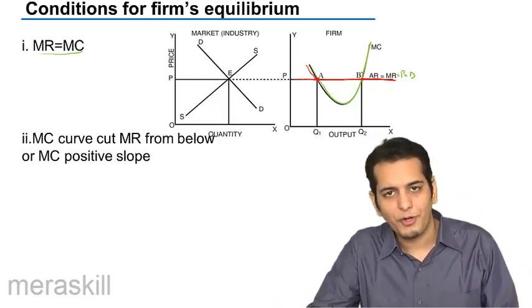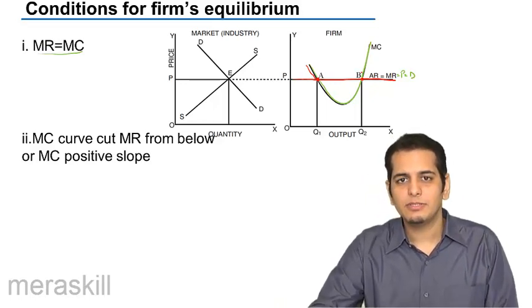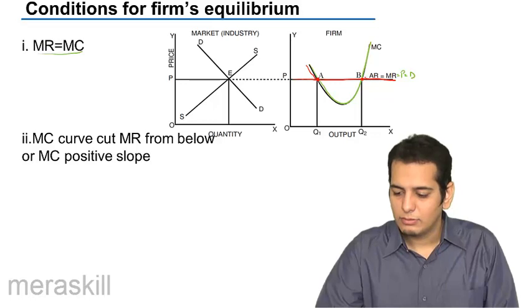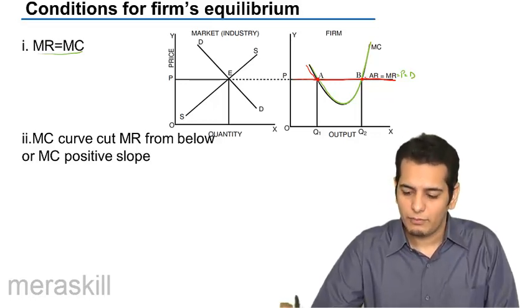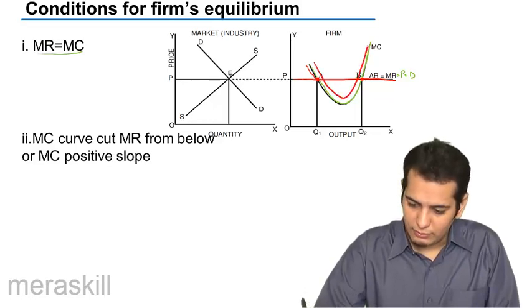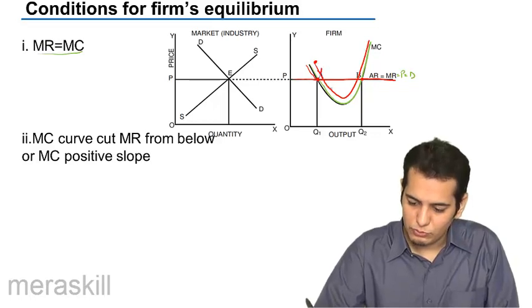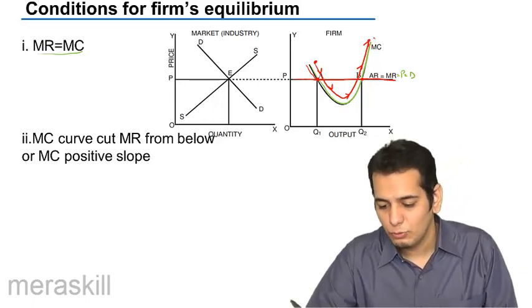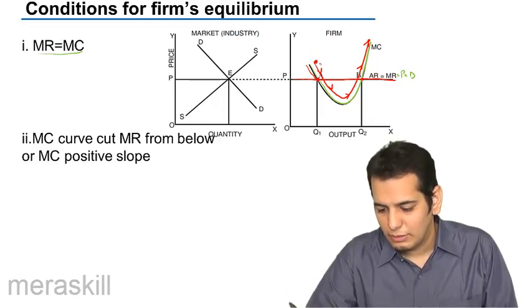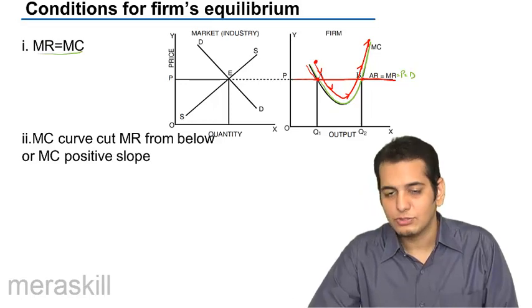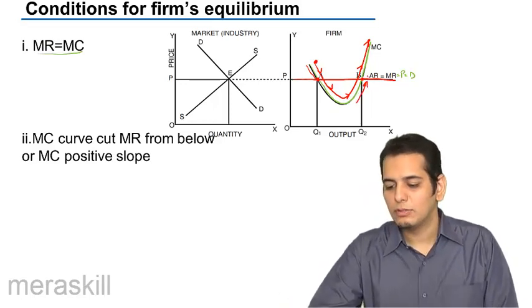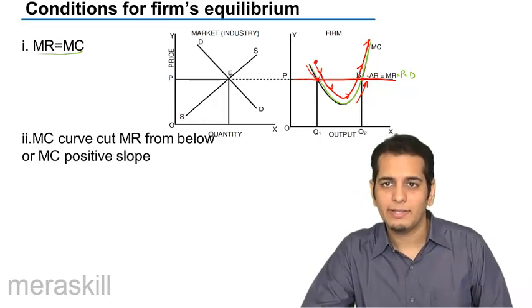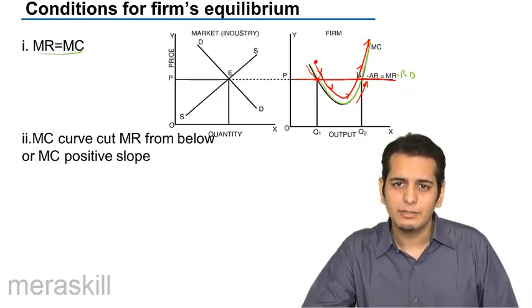What's the case with point B? Is the MC curve cutting the MR curve from below? Yes, it is cutting the MR curve from below. You can see the flow of the curve — it starts from here, goes in this direction, and finally when it reaches B, it is cutting the MR curve from below. The MC curve is reaching MR when it is below the MR.